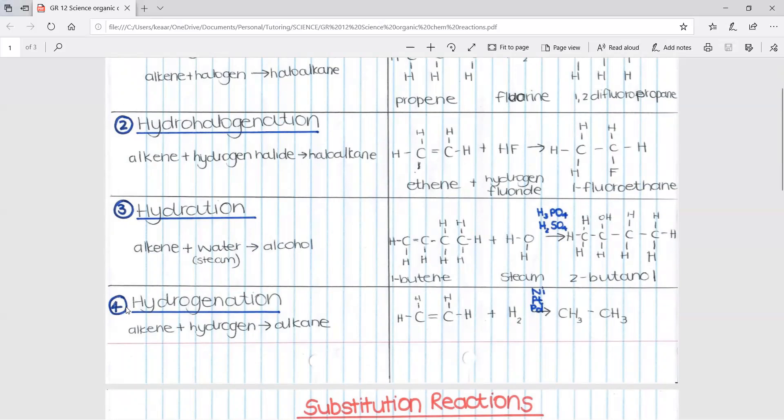The fourth type of addition reaction is hydrogenation. This is when we have an alkene and you add hydrogen to form an alkane. Here is an example. If you have ethene, so carbons with a double bond, and you add hydrogen, this hydrogen, each of them will add onto the carbons that had the double bond to form ethane. Side note, you need a catalyst of Pt or Pd. Hydrogenation is used in the formation of margarine.